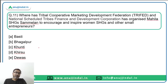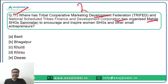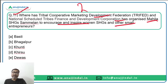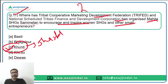Question eleven: TRIFED — Tribal Cooperative Marketing Development Federation — and the National Scheduled Tribes Finance and Development Corporation organized a Mahila SHG Sammelan, where SHG stands for Self-Help Groups, to encourage and inspire women SHGs and small entrepreneurs. This was organized in Khunti, the birthplace of Birsa Munda, which is in Jharkhand. Option C is the correct answer.